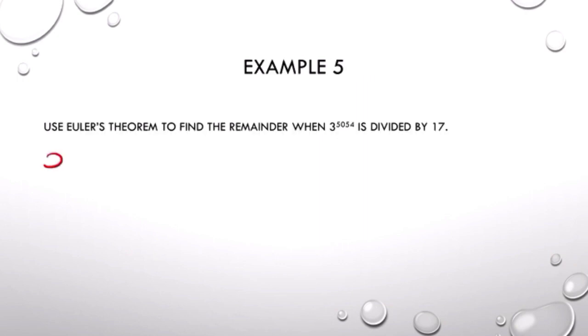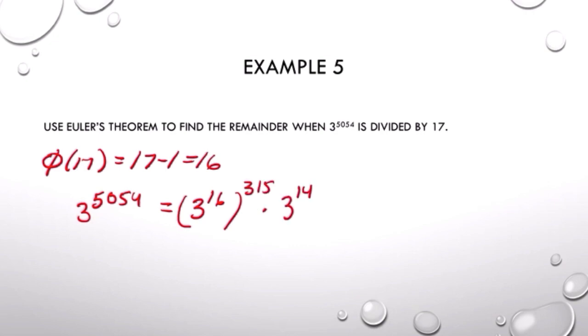Example 5. Now we know that phi of 17 is 16, so 3 to the 16th power is going to be congruent to 1 mod 17. We want to use that to reduce 3 to the 5054.